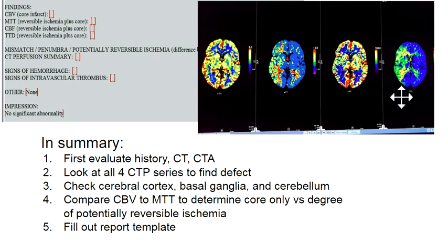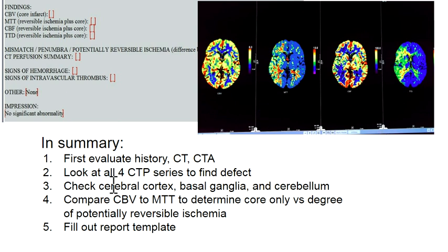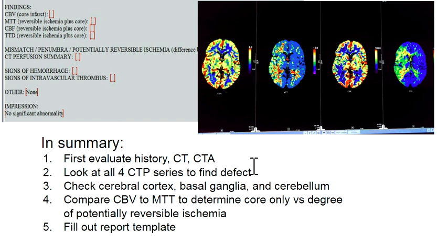Then look at all four CT perfusion series to find the defect. If they're all normal, treat as normal; if any is abnormal, you must analyze it. TTD is often your friend to find the defect. Be careful especially on the CBV — check the cerebral cortex, basal ganglia, and cerebellum for subtle defects. Once you've found the defect, compare CBV and MTT side by side to determine if it's core only or if there's surrounding potentially reversible ischemia. Then fill out the report template, call the doctor, and you're done.